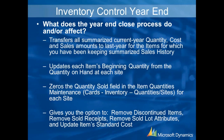What does the year-end close process do? It transfers all the summarized current year quantity, cost, and sales amount to last year, so you won't see those amounts in your current transactions. There are some reports those amounts affect, like the turnover report, so you need to make sure you print those before doing the year-end closing. It also updates the beginning quantity and zeros out the quantity sold field. At the time of closing you can also select to remove discontinued items, remove sold receipts and sold lot attributes, and update the item standard cost.